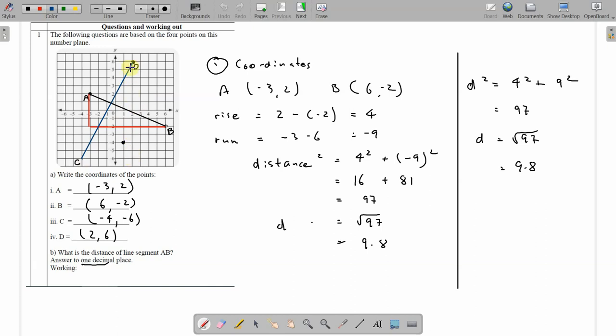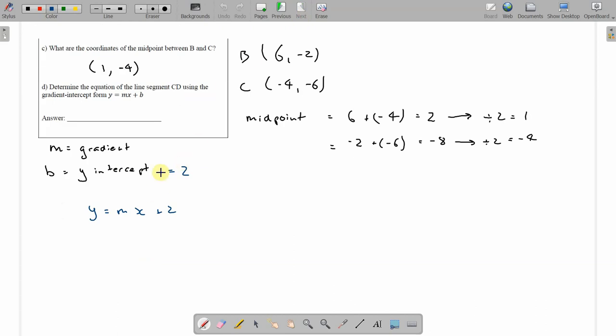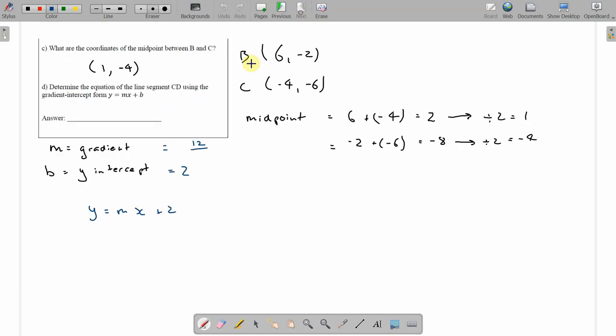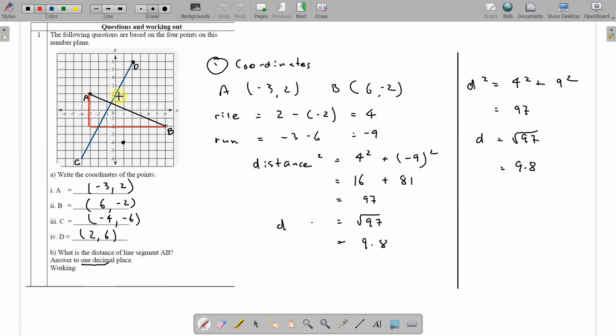So rise is this far. What's that, 1, 2, 3, 4, 5, 6, 7, 8, 9, 10, 11, 12. 12 is the rise. From there to there, 1, 2, 3, 4, 5, 6. Equals 2. And that's where our m goes, so this would be y equals, well m is 2 and we've got our y equals 2x plus 2. There's our equation of the line CD, y equals 2x plus 2.